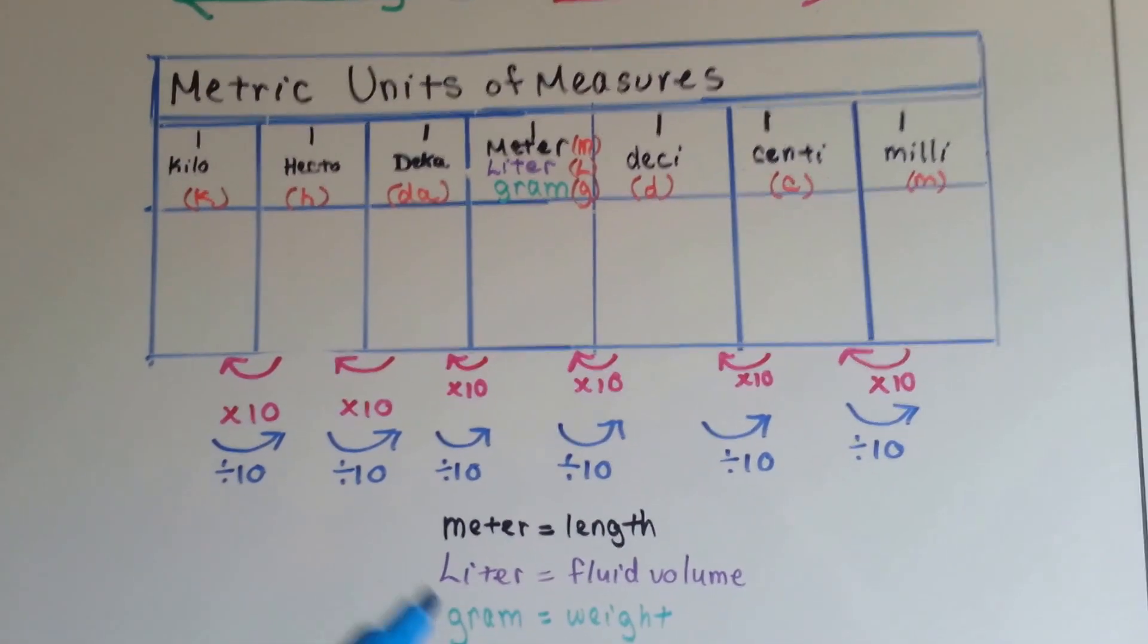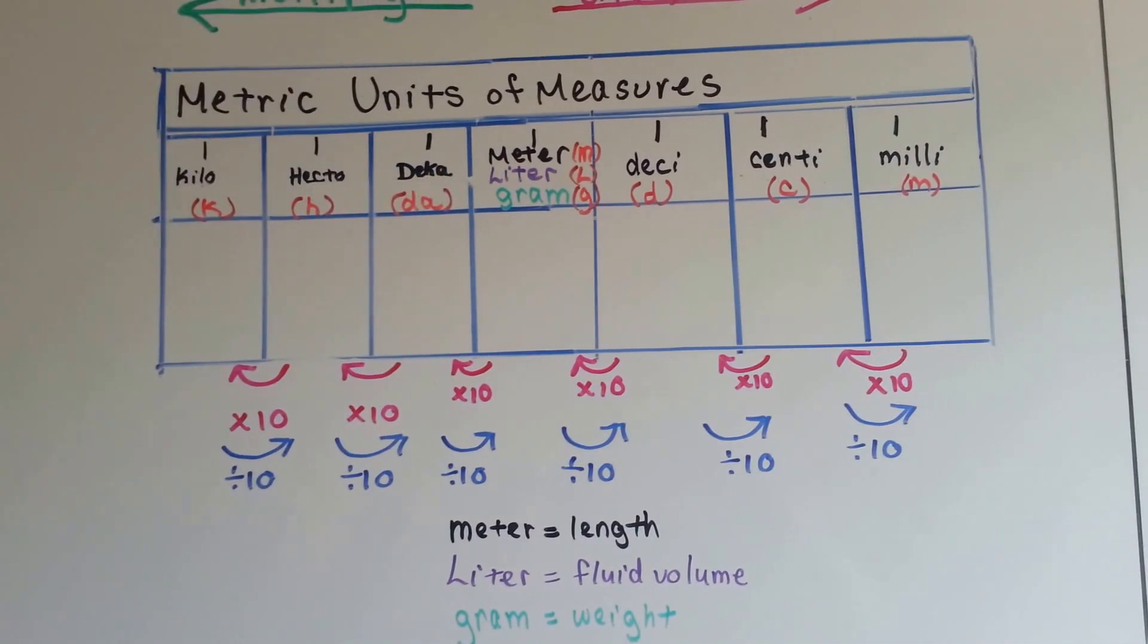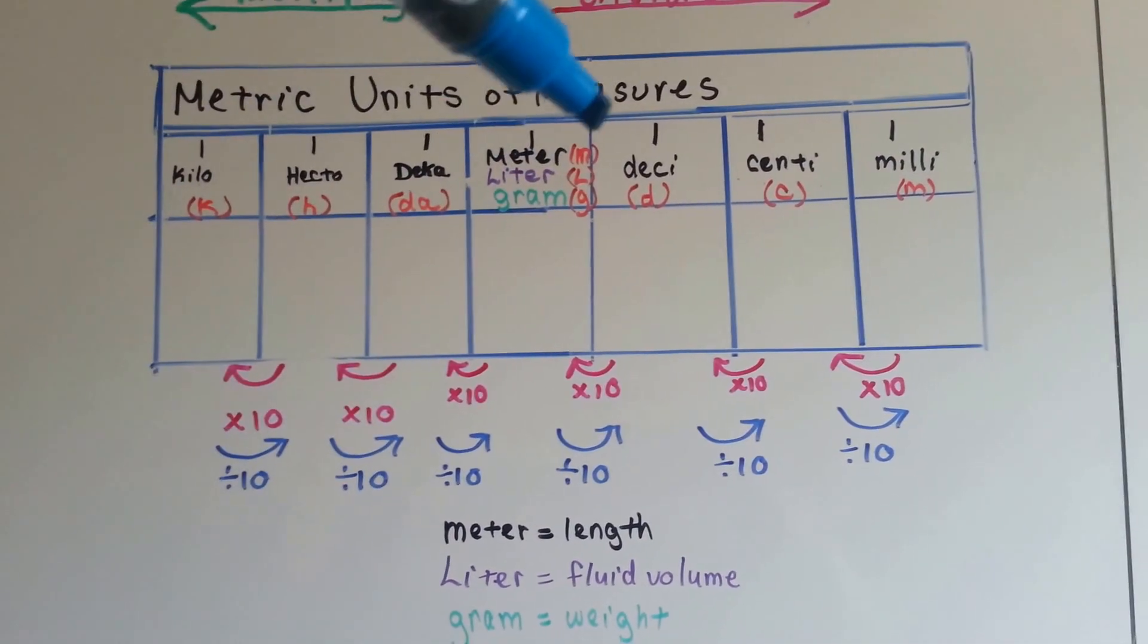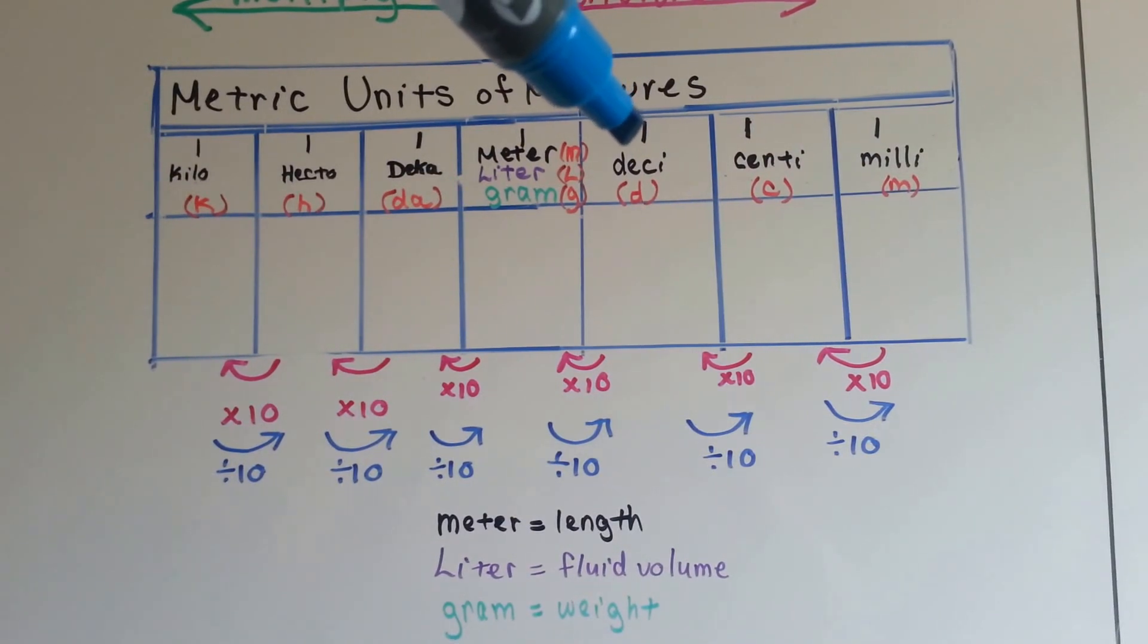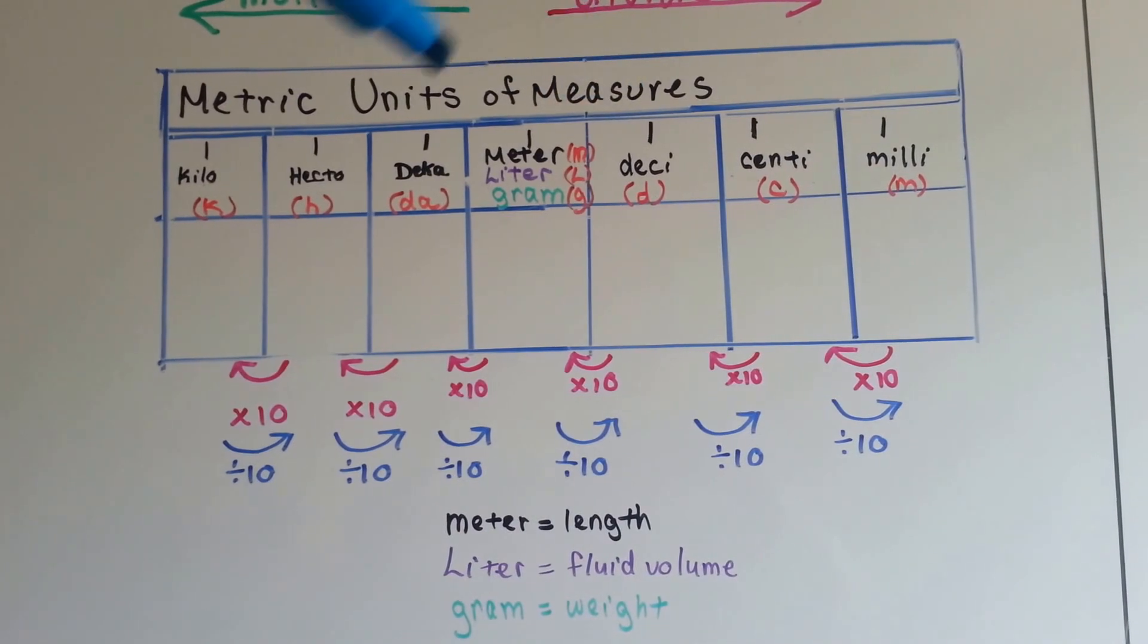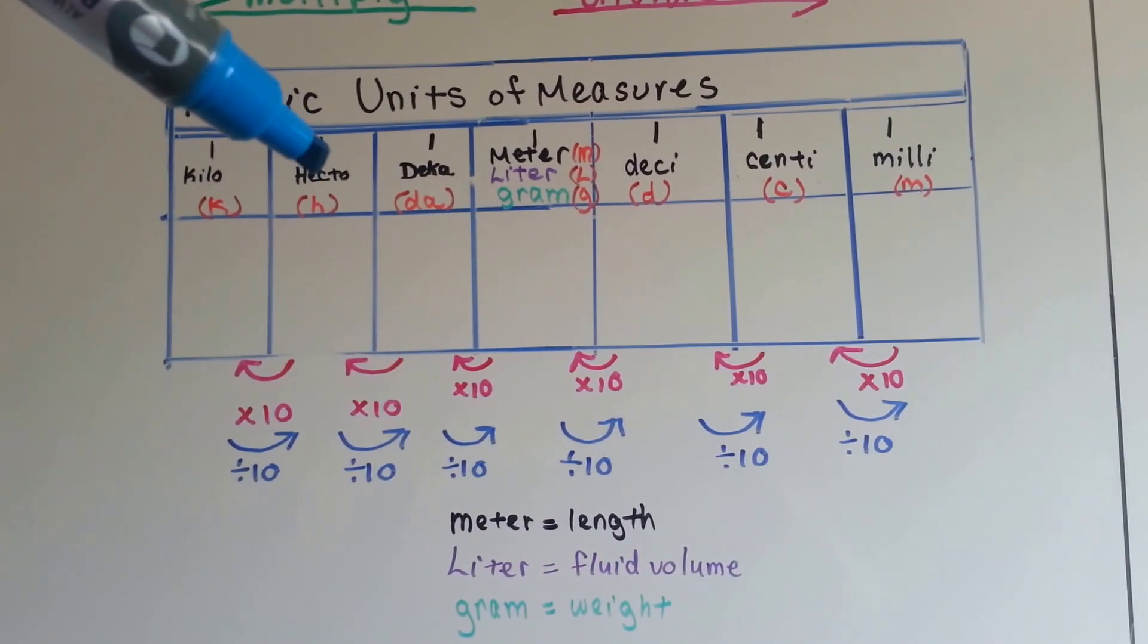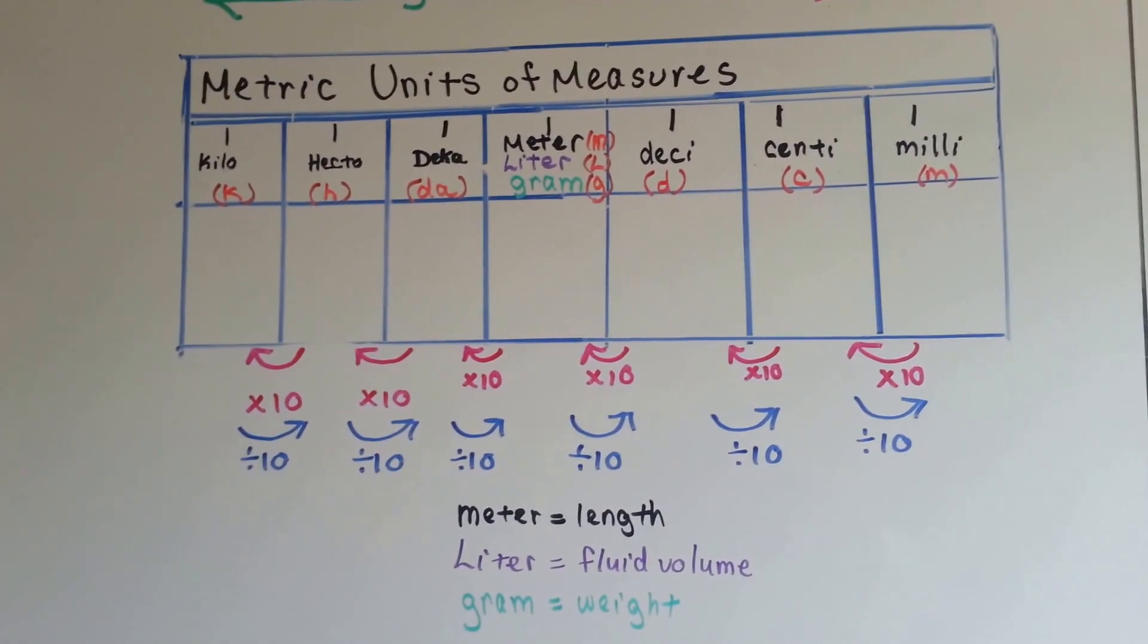Depending on what type of measurement it is, we slap the back to it, the suffix. If we're measuring fluid volume, we'd have a deciliter. If we're measuring metric length, it would be a decimeter. If it was a weight, it would be a decigram. It would be a hectogram, hectoliter, or hectometer, depending on if it was length, volume, or weight.